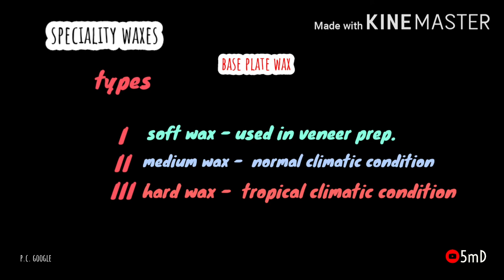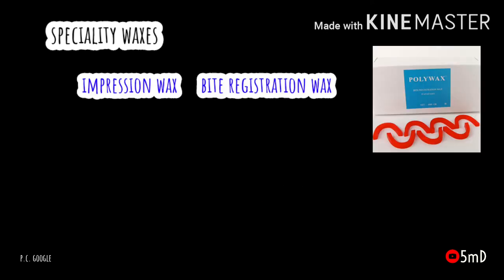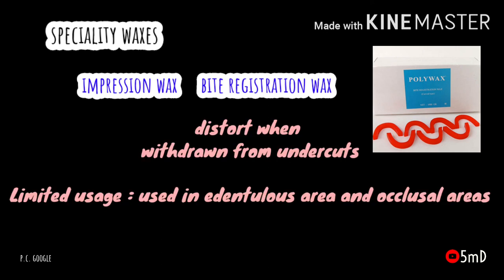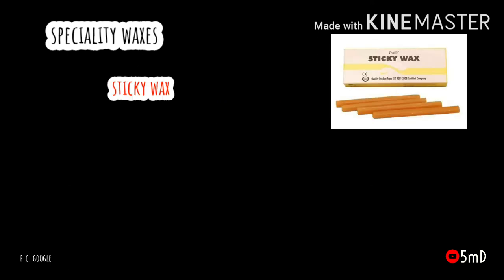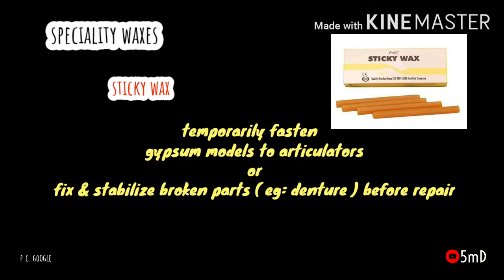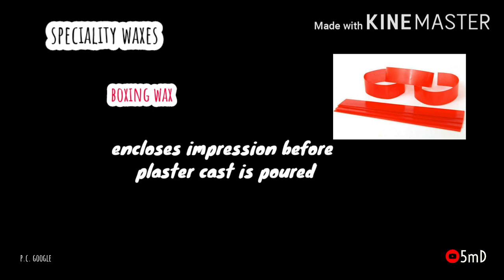Impression wax, also known as bite wax or character wax, tends to distort if withdrawn from undercuts, so it is usually limited to edentulous sides of the mouth or occlusal surface areas. Sticky wax is a yellow or orange colored stick-shaped wax used to temporarily fasten gypsum models to components and to stick broken parts before denture repair work. Boxing wax is another useful material which encloses the impression before plaster or stone cast is poured.